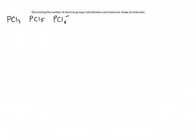We're going to determine the number of electron groups, the hybridization, and molecular shape of three different species: phosphorus trichloride, phosphorus pentachloride, and the phosphorus hexachloride ion — all known to exist. Phosphorus has five valence electrons and chlorine has seven valence electrons, so that's very important.